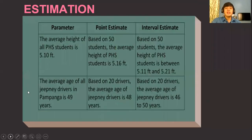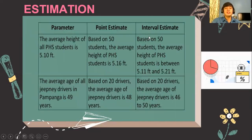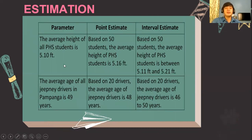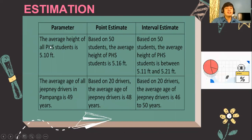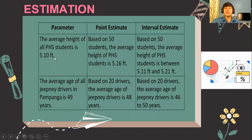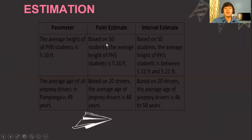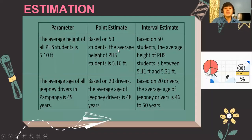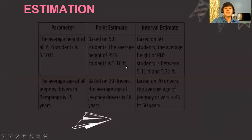Let us differentiate a point estimate from an interval estimate. For example, if the parameter is that the average height of all PHS students is 5.10 feet — for the point estimate, we obtain a sampling technique. Based on 50 students, the average height of PHS students is 5.16 feet.